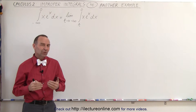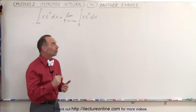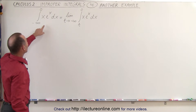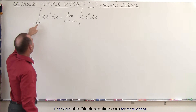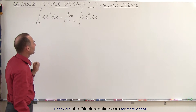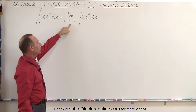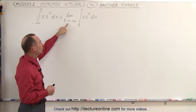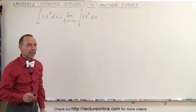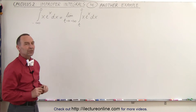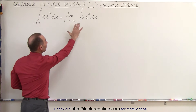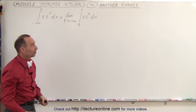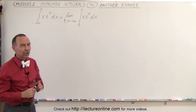Welcome to iLecture Online. Here's a good example of why we need to use a definition when dealing with improper integrals. We're trying to integrate x·eˣ dx from minus infinity to 0. We want to first plug in the limit t and then evaluate it as we allow t to reach minus infinity. I'm going to show you why we need to do that by first solving the problem ignoring that step — simply plugging in the limits directly — so you can see why we need to do it the correct way.